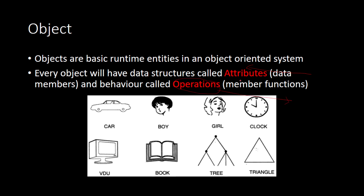What do we mean by properties and functionalities? Let's take the example of a car. We can define a lot of attributes related to a car. For example, the color of the car can be one attribute, the weight of the car, and the company that makes the car — what we call the make — and so on.